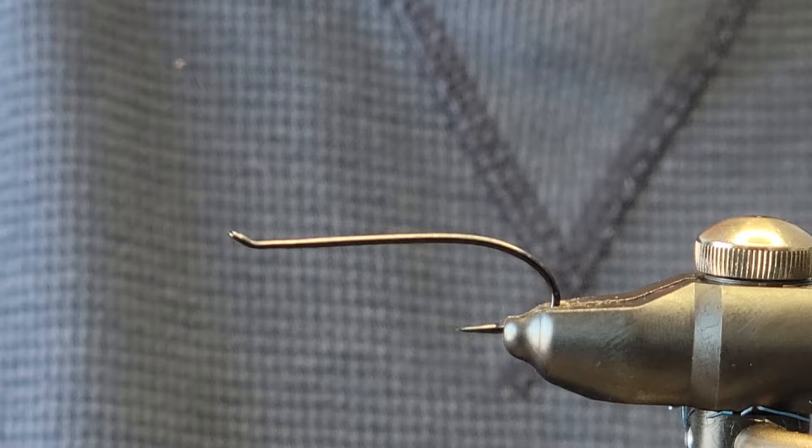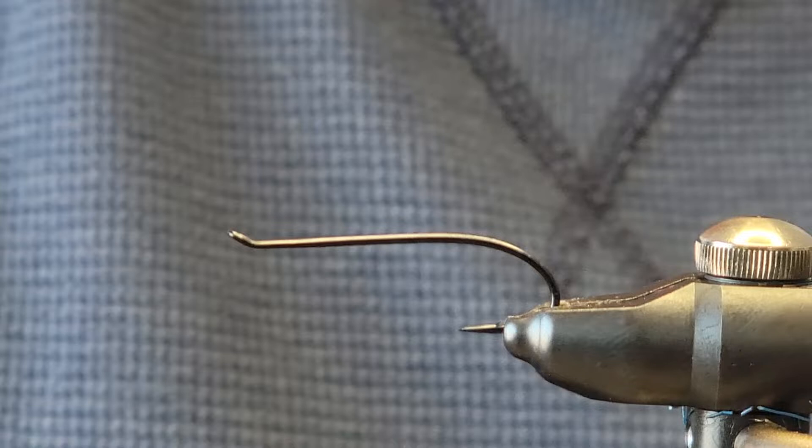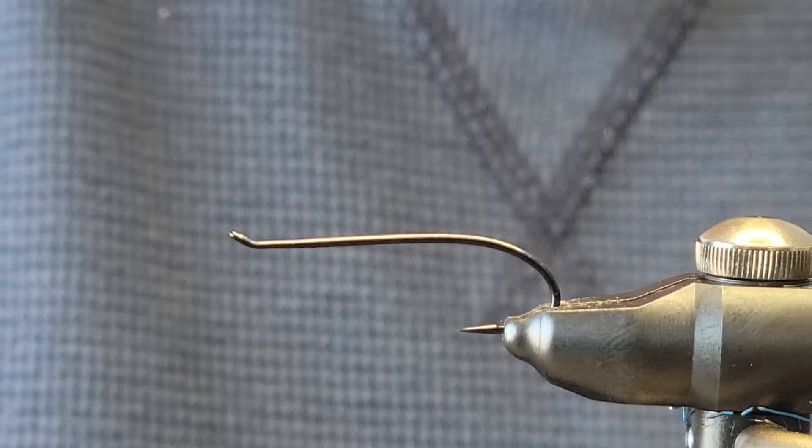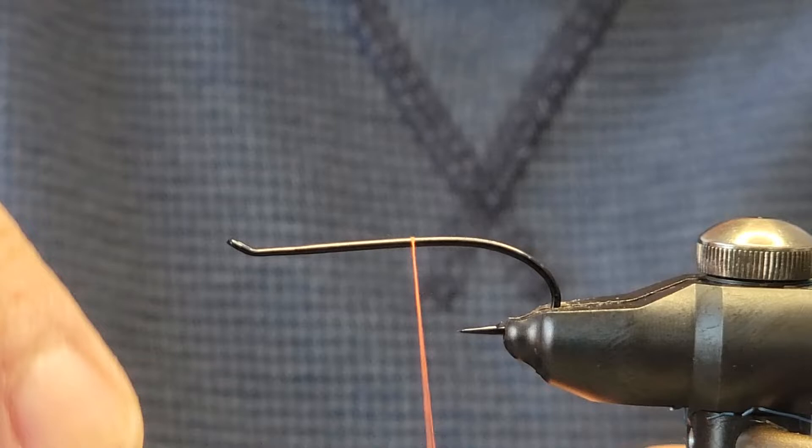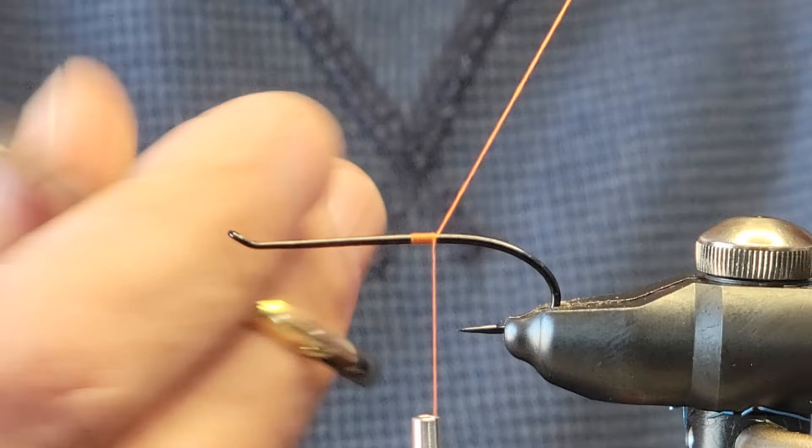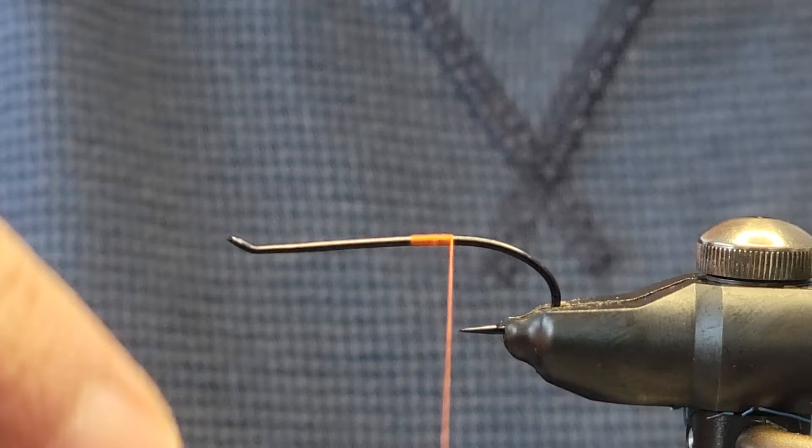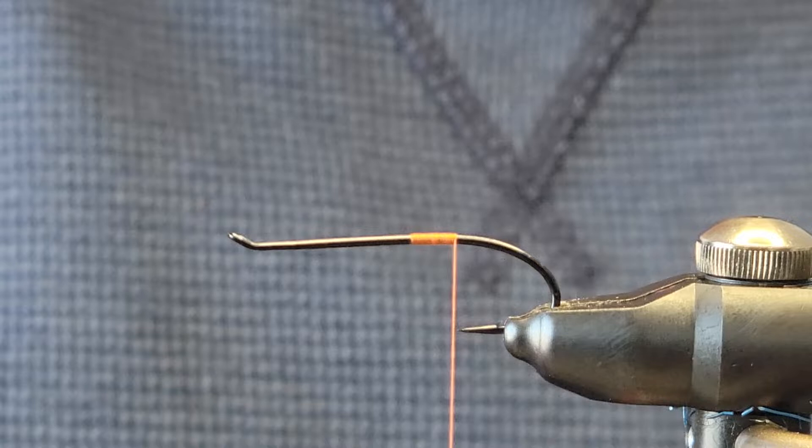Very messy to tie, but very good to fish. We're using a number 4 Salmon Hook and we're going to be using some 8-0 Orange Thread to start. We're going to tie that in at the back here and just wind it back to about the hook point.